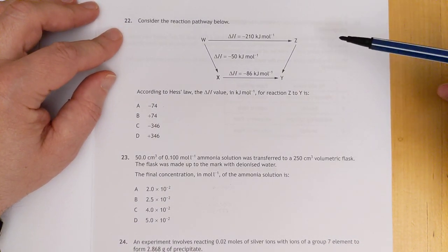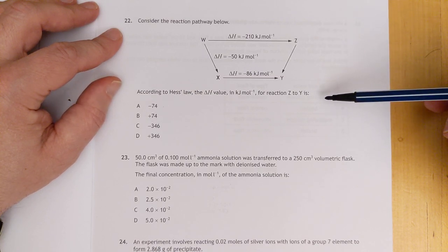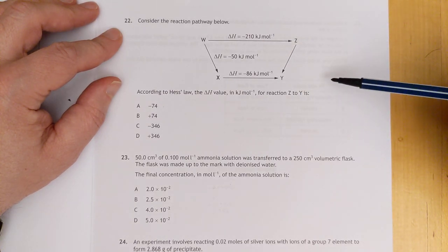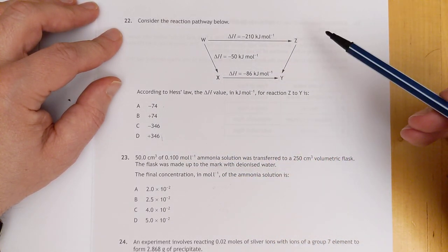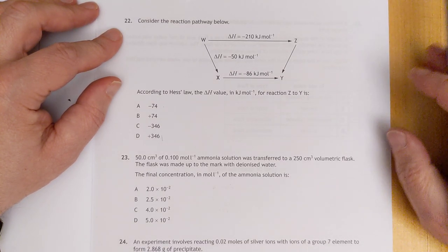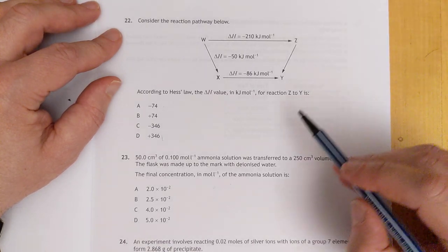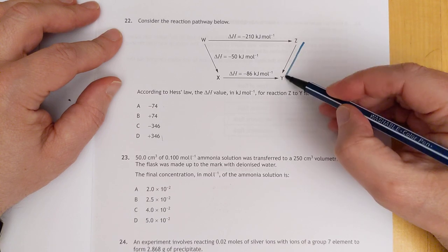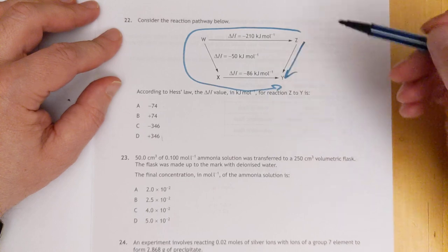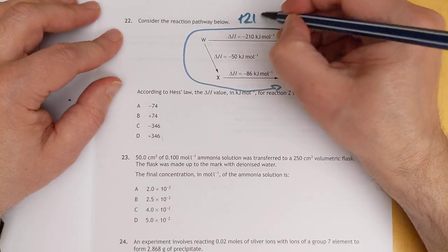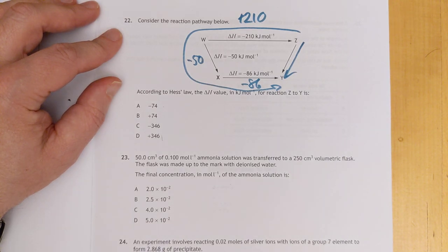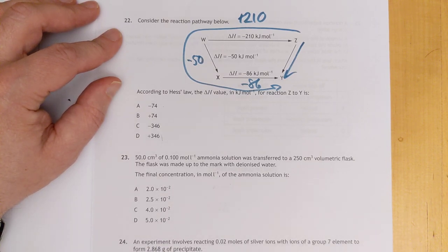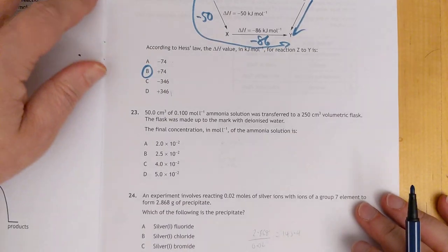Consider the reaction pathway shown below, according to Hess's law, the delta H value. This is ringing a bell from like 15 years ago as well. I recognize these numbers. They've not even changed the numbers. I'd love to go back and see if I could find that. We're going from Z to Y. So we want to go from there to there, which means we've got to go around the houses, around this way. Which means this needs to be changed to positive 210. This stays as negative 50. And this stays as negative 86. Should do that in my head, but it's late at night. So therefore, 210 minus 50 minus 86 gives us plus 74.